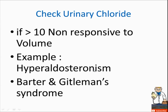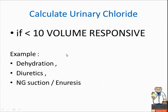If urinary chloride is greater than 10, these conditions are non-responsive to volume. Examples include hyperaldosteronism, Bartter syndrome, and Gitelman syndrome.